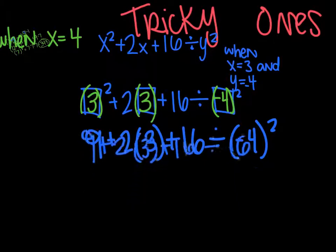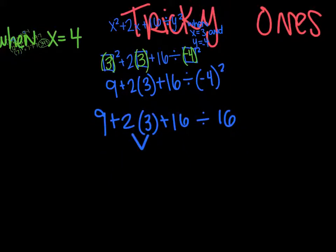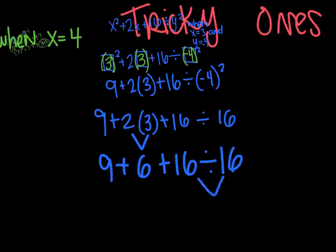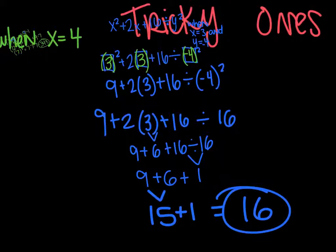Now I can do multiplying and dividing from left to right. 2 times 3 is 6. 9 plus 6 plus 16 divided by 16. And division happens to come next. 16 divided by 16 is 1. And write down everything I haven't used yet. And then adding and subtracting from left to right. And 9 plus 6 is 15 plus 1. That will give me 16 for a final answer.